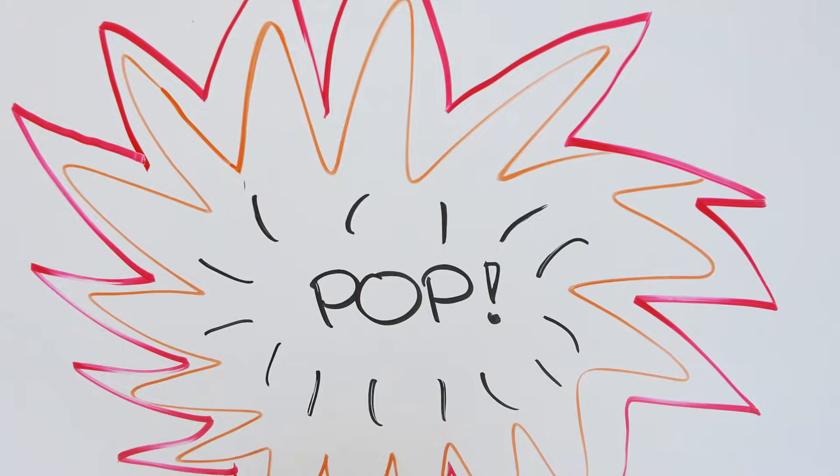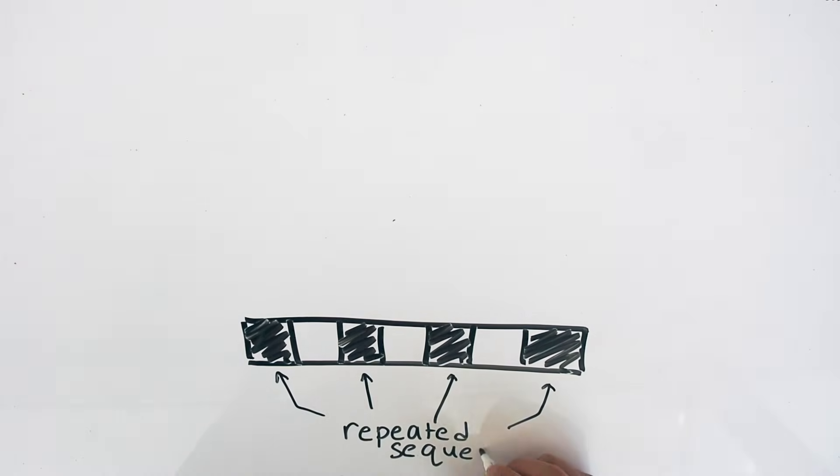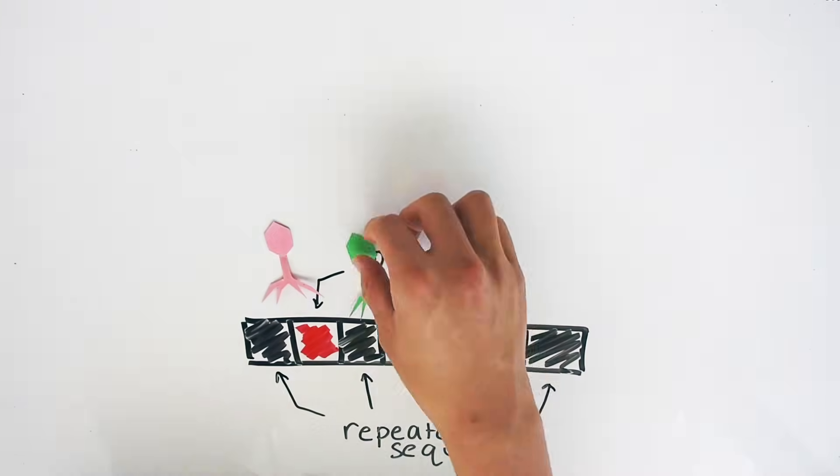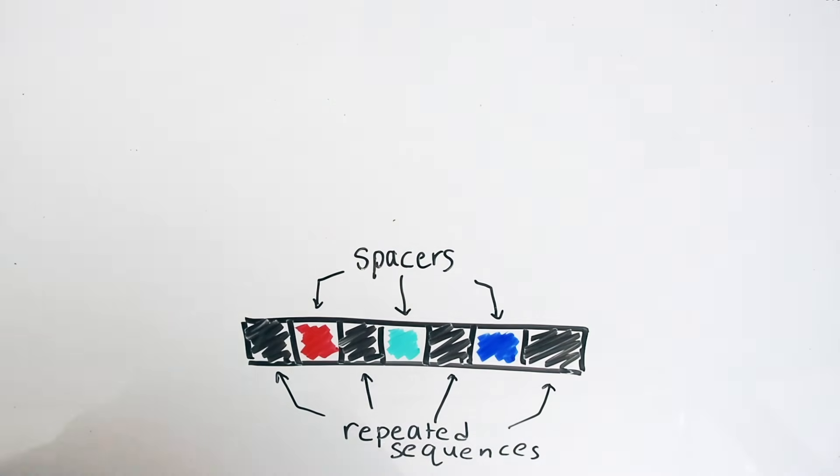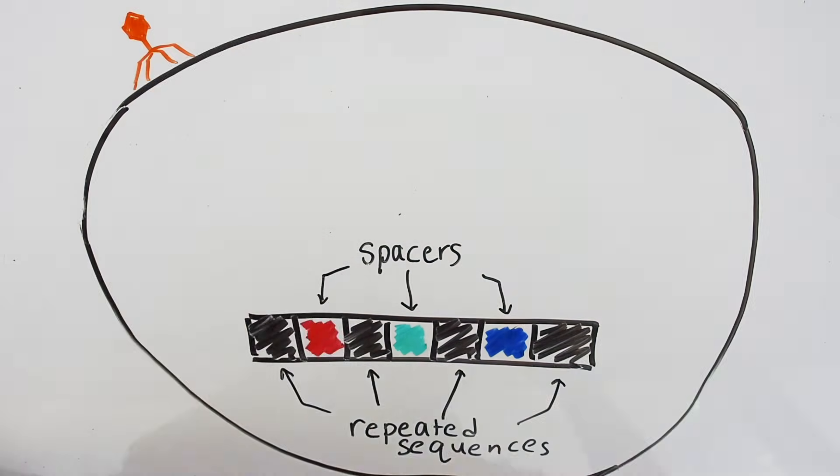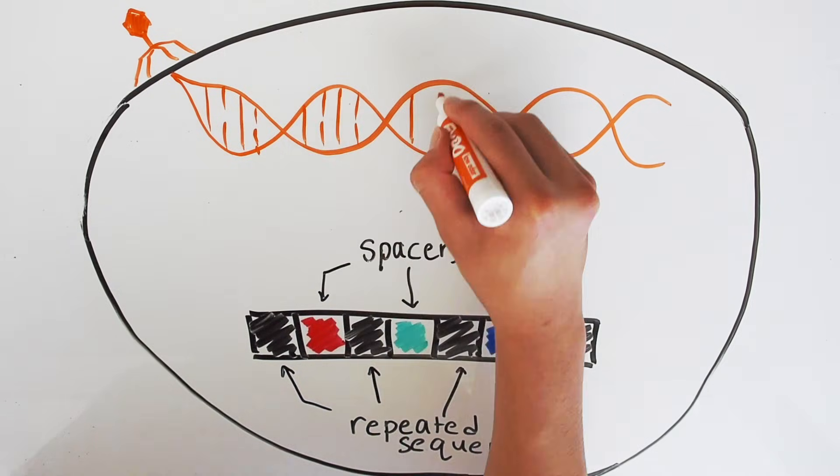In response, bacteria have evolved a protective immune system called CRISPR. The CRISPR array is a short stretch of DNA in bacteria composed of alternating repeated sequences and target specific spacers. These spacers contain the DNA of invading viruses collected from past infections. When a virus infects a bacterium, a new spacer is added into the growing CRISPR array.